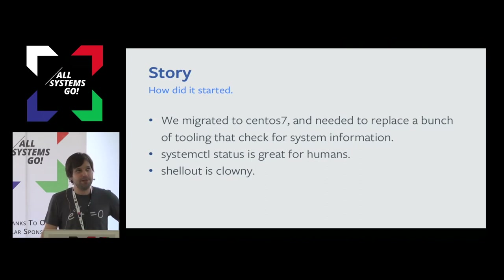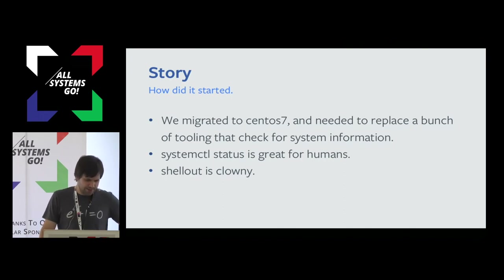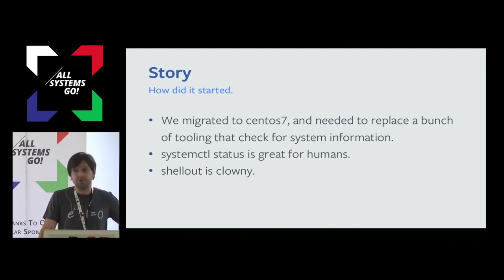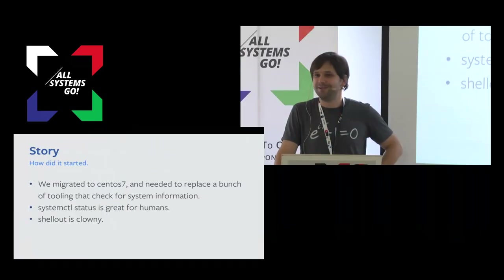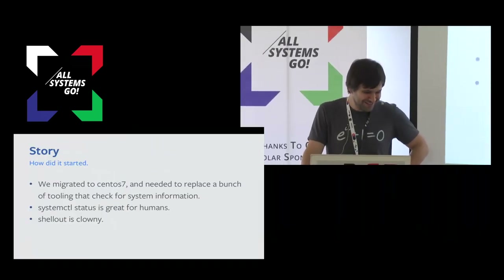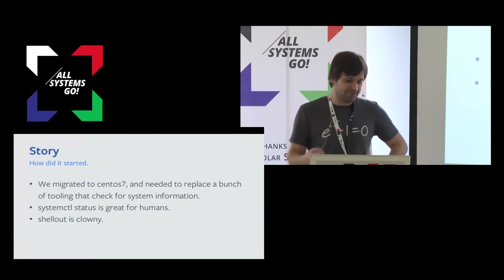One of the things we typically did was execute something like '/etc/init/cassandra status', parse the output, and decide if Cassandra was running. All these things that were not really a good idea to do with SystemD. For instance, SystemD comes with 'systemctl status', which is great for humans but really hard to parse. If you are in a high-level language — and I use this as a synonym for Python — to do this, you have to shell out. I consider that a little bit clunky, so it would be really nice to have a native interface to talk to SystemD.